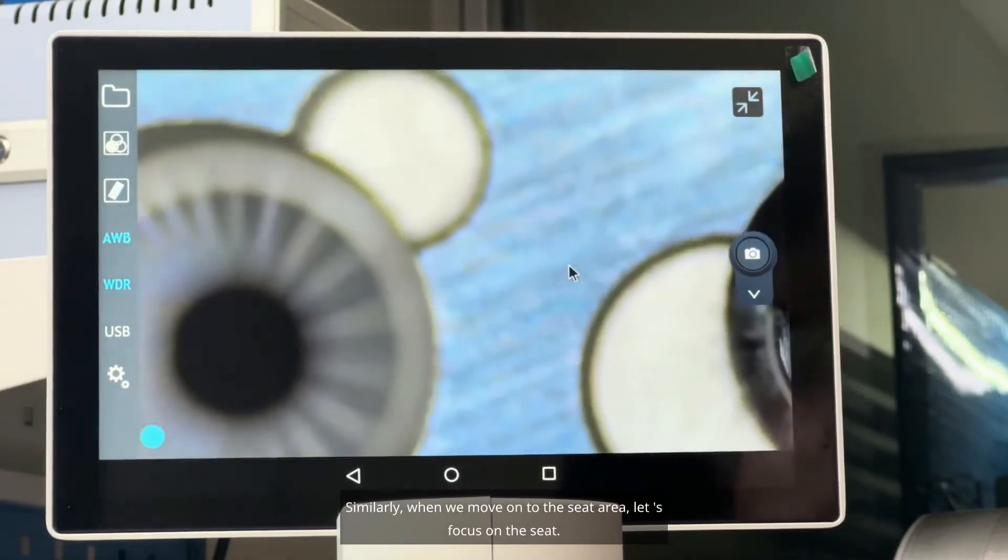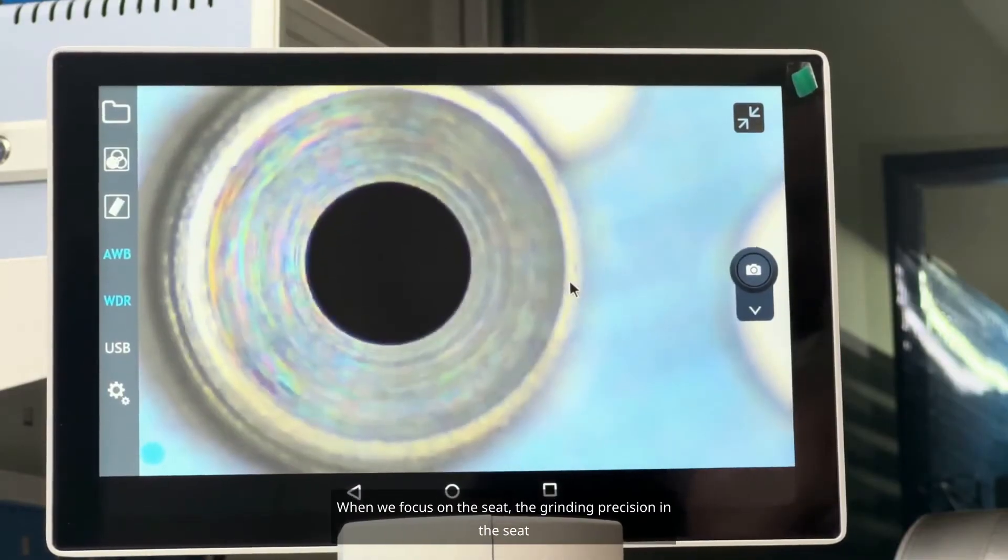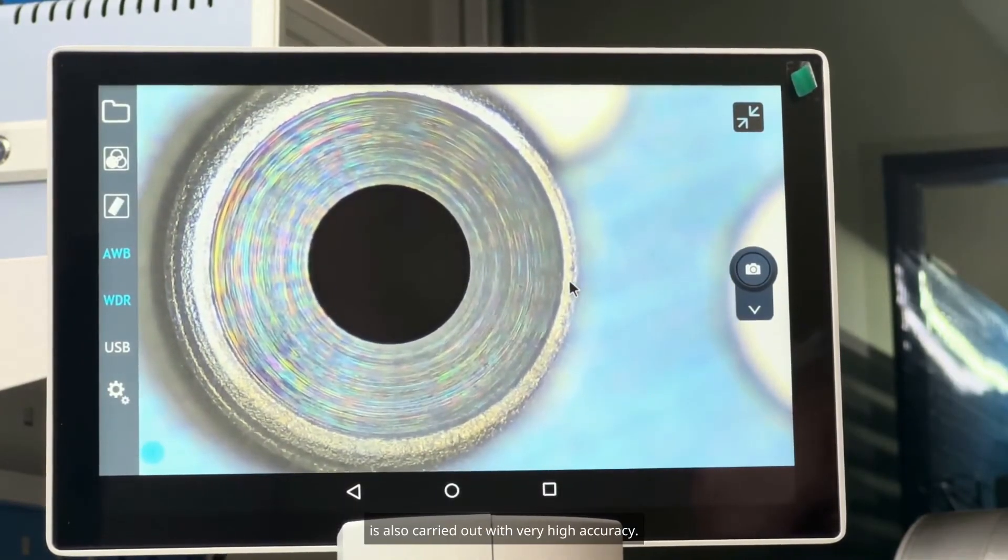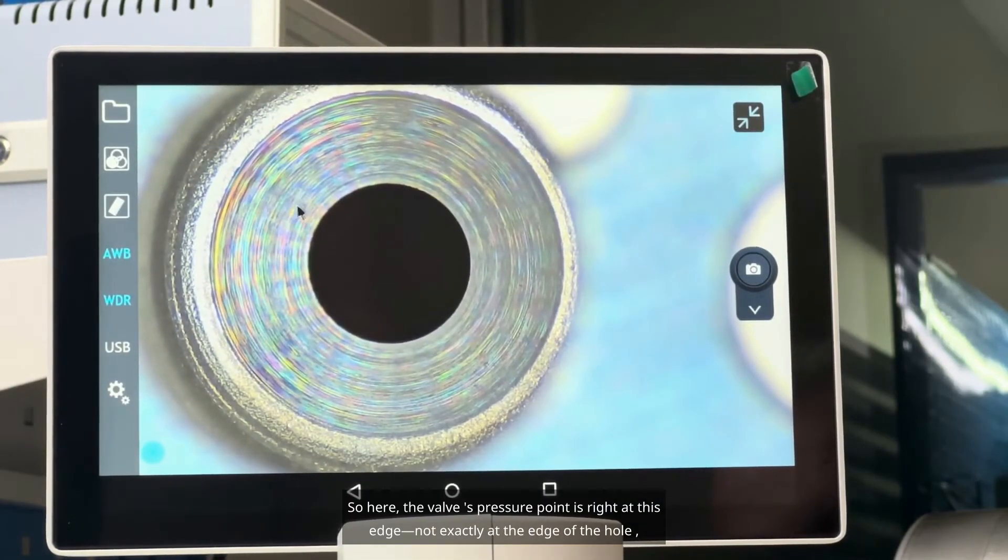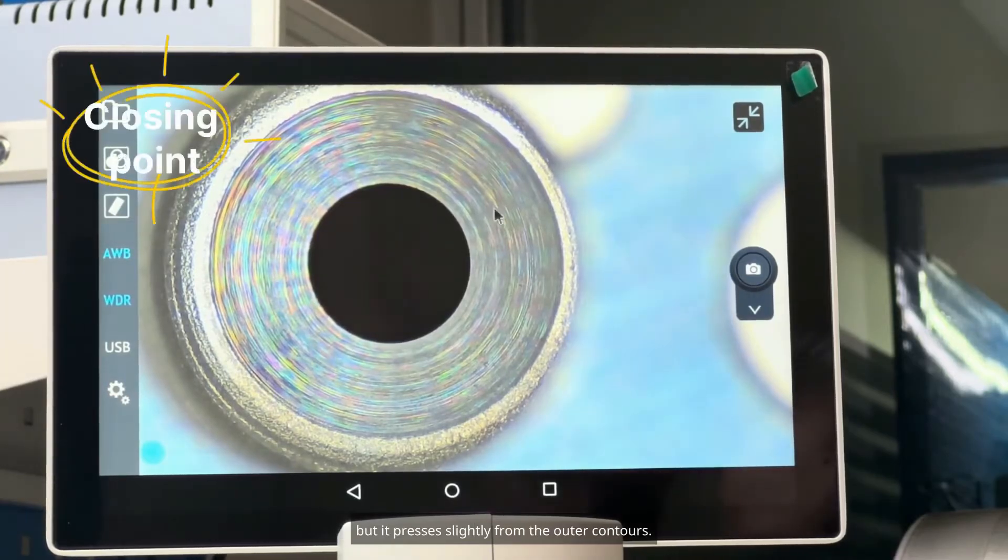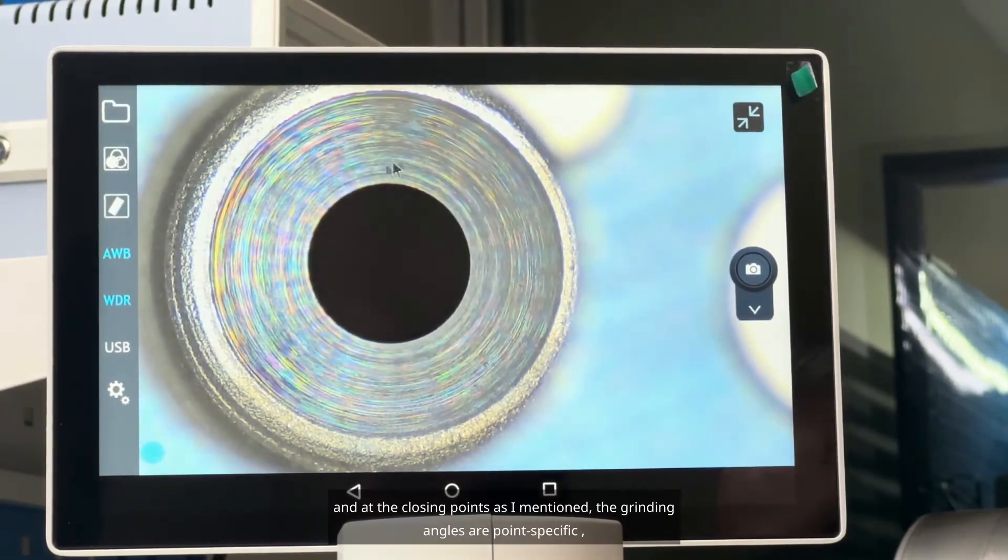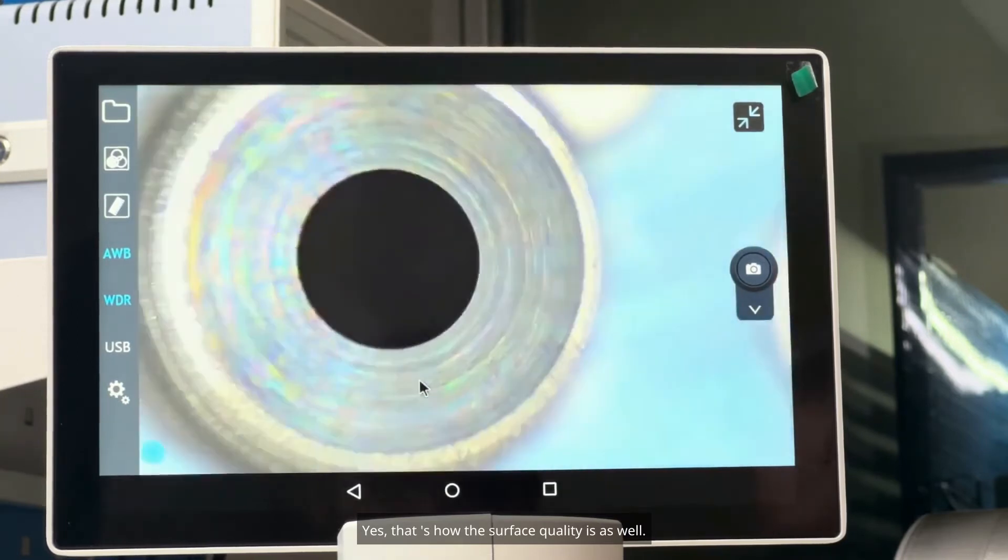It causes dynamic operation. The surface quality of this area is ground with very high precision. Similarly, when we move on to the seat area, let's focus on the seat. When we focus on the seat, the grinding precision in the seat is also carried out with very high accuracy. So here, the valve's pressure point is right at this edge, not exactly at the edge of the hole, but it presses slightly from the outer contours. And at the closing points, the grinding angles are point specific. So they match each other perfectly. That's how the surface quality is as well.